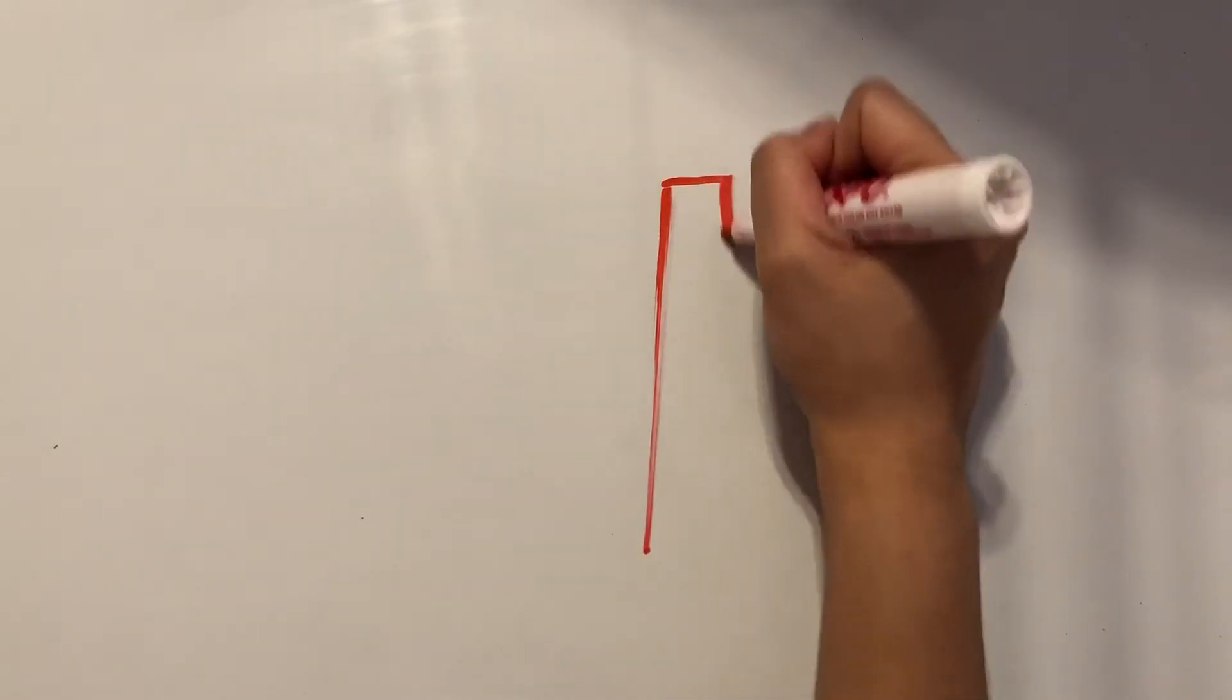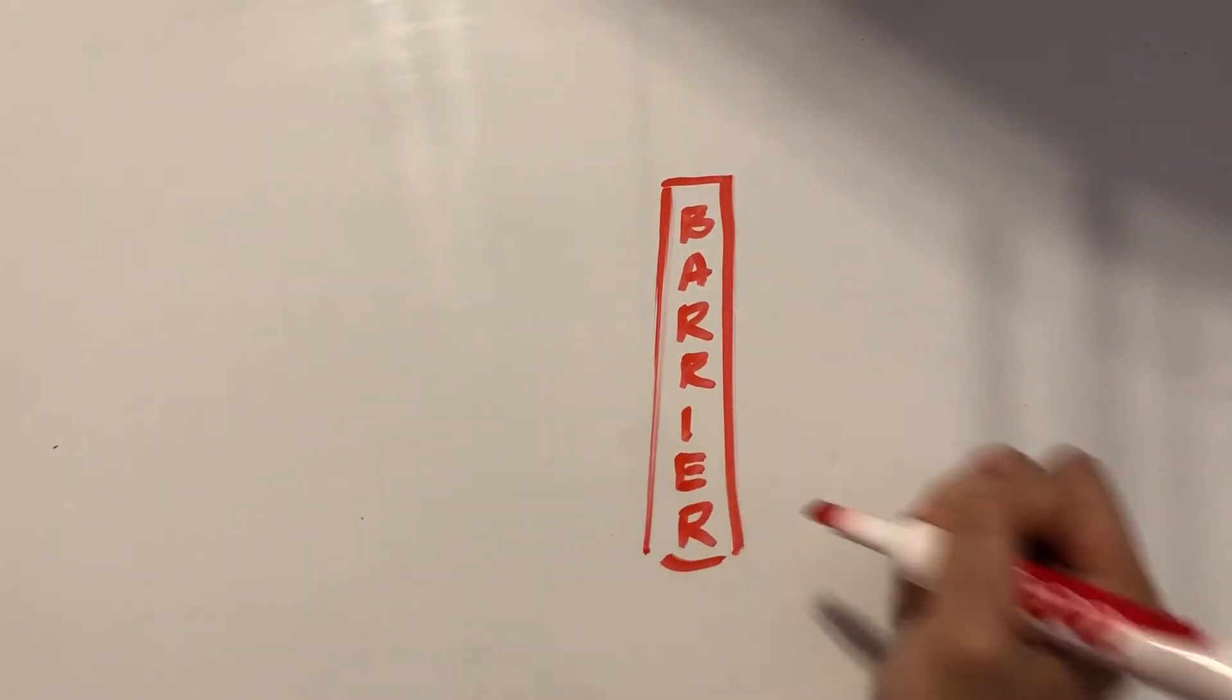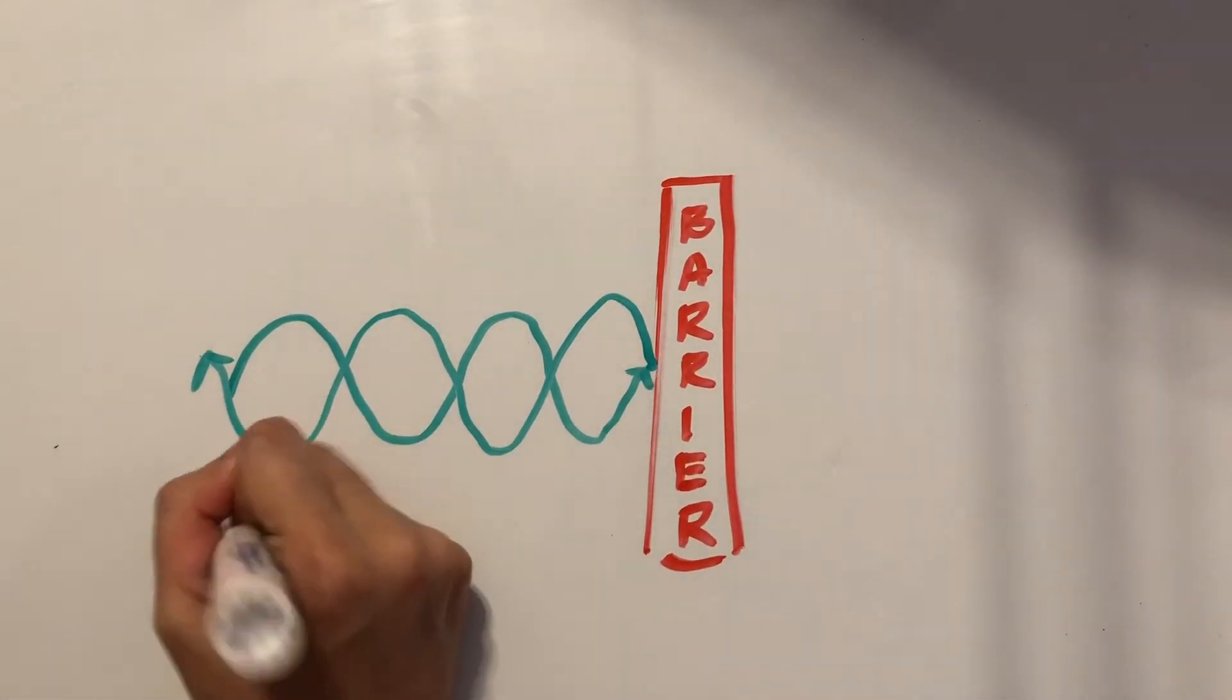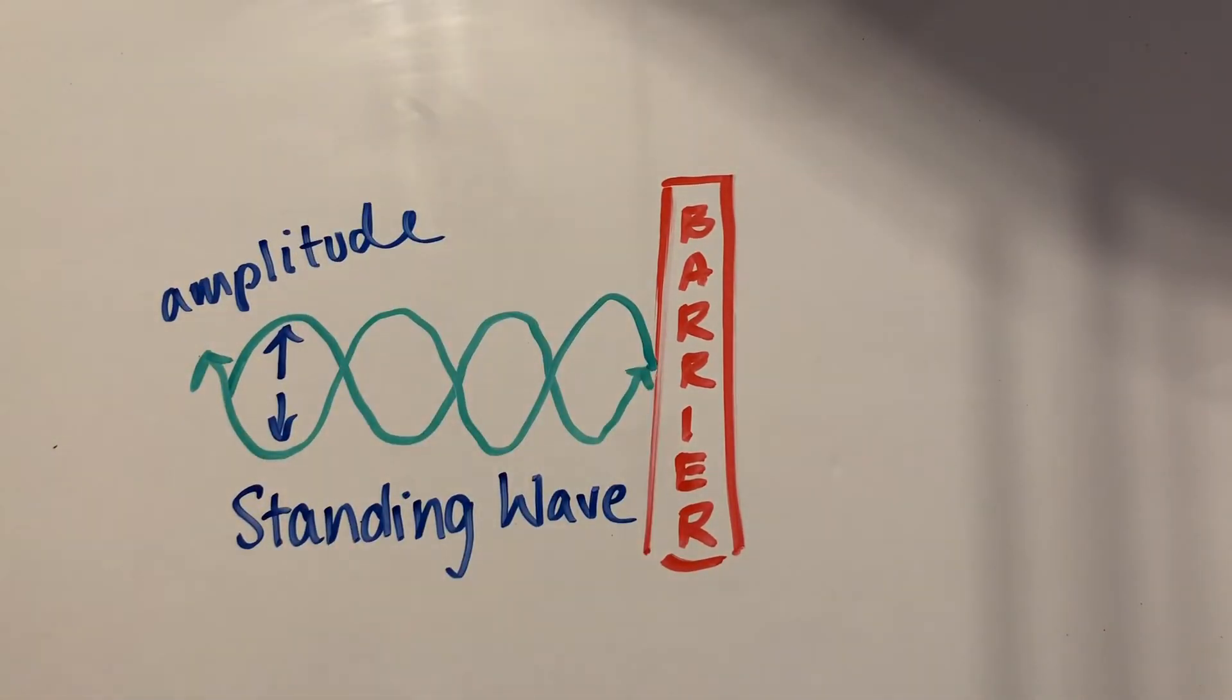When there's a barrier in a medium, that can change a wave's motion. When the wave hits a rigid barrier, the wave will be reflected back. A standing wave results when the incoming and reflected waves combine to produce a wave where the amplitude seems to stand in one location.